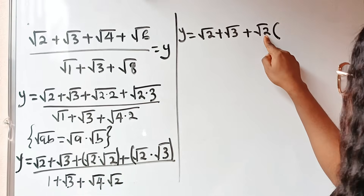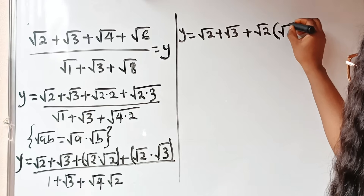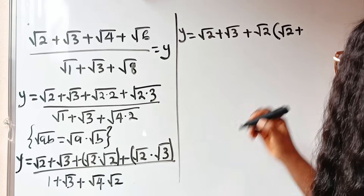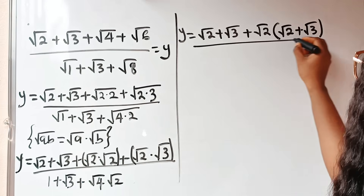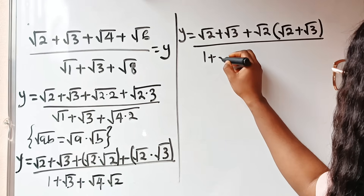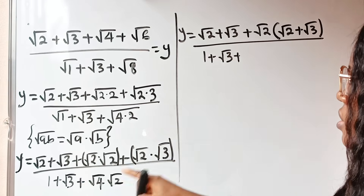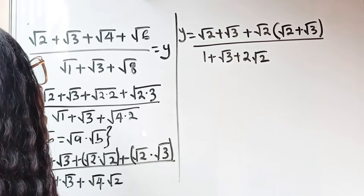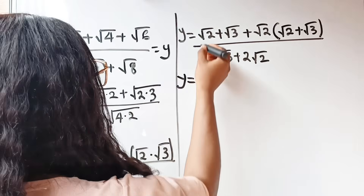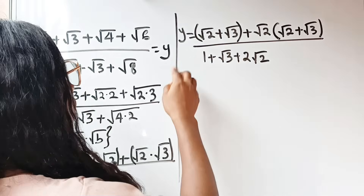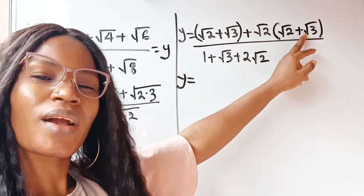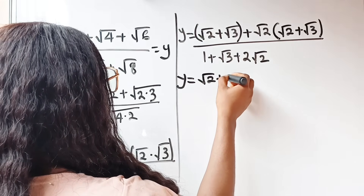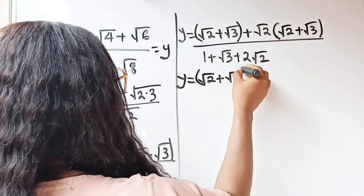Root 2 divided by root 2 gives us root 2 remaining, plus root 3 — root 2 divided by root 2 leaves root 3 — all divided by 1 plus root 3 plus root 4 which is 2. So we have root 2 factored out. We can bring out root 2 plus root 3 as our common factor.